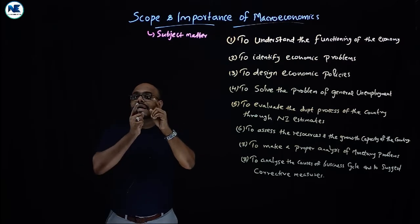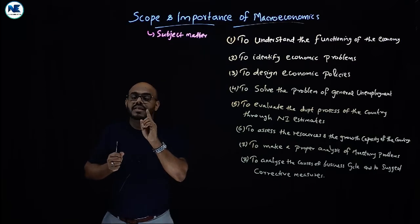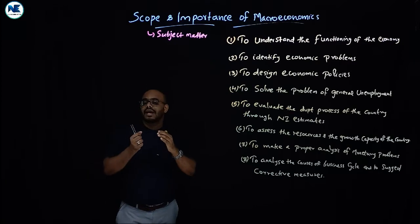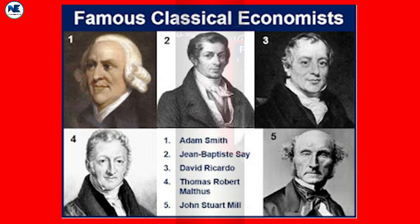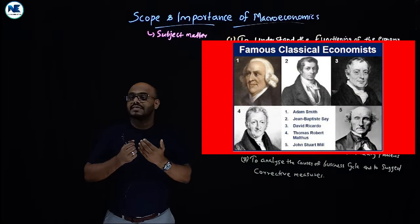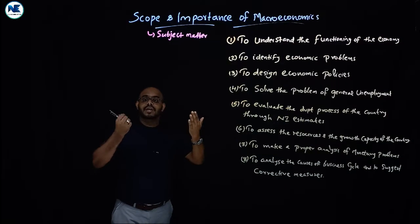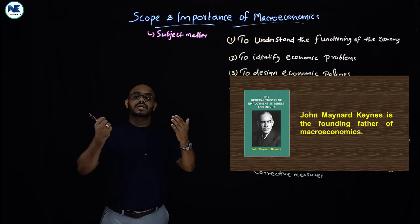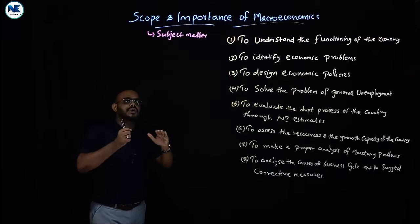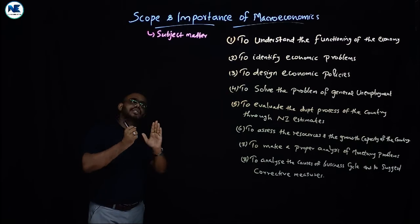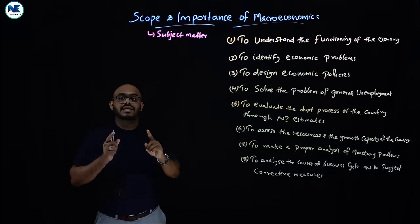Before the 1930s Great Depression, there was only one economics, dominated by classical economics — Adam Smith, David Ricardo, Thomas Robert Malthus, and Say's Law of Markets. After that, John Maynard Keynes introduced macroeconomic analysis and emphasized the importance of fiscal policy. Today's topic covers the scope, importance, and subject matter of macroeconomics.